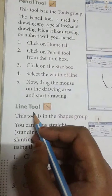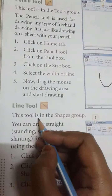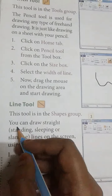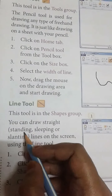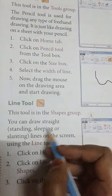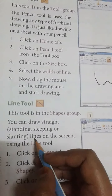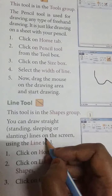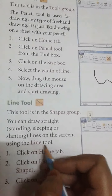Next is the Line tool. This tool is in the shape group. You can draw a standing, sleeping, or sliding line on the screen using the line tool.